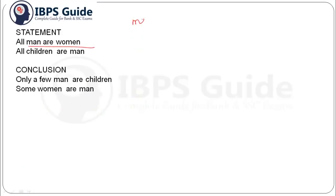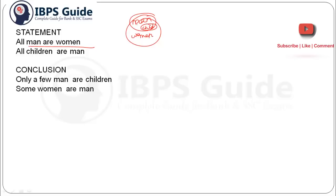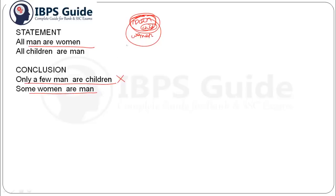Next question: 'All man are women' and 'All children are man.' So all children will come inside man. Conclusion: 'Only a few man are children.' Can we definitely say this? It may be possible that the whole of children covers the whole area of man. So it is not possible, and this conclusion becomes wrong. Next conclusion: 'Some women are man.' Yes, this portion of women shares its area with man, so this is possible and this conclusion is true.